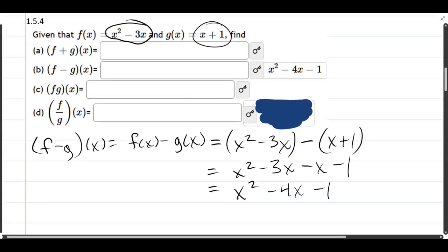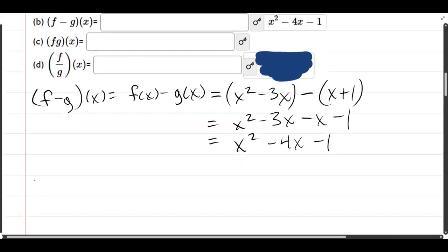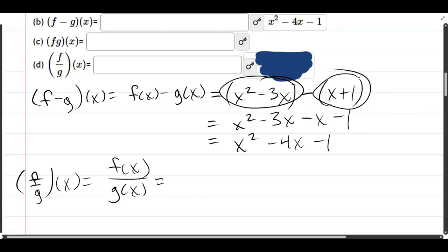Part d, f over g of x is just f of x over g of x. And now actually I'm happy that I put these in parentheses because it's really easy for me to see what is each term. What's f and what's g.